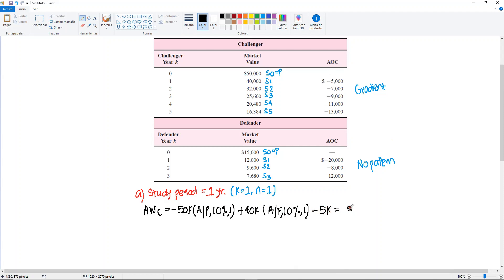subtract 5,000, so we just subtract the 5,000, and we will end up with minus 20,000. We must do the same for the defender, minus 15,000,